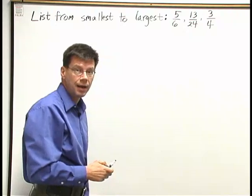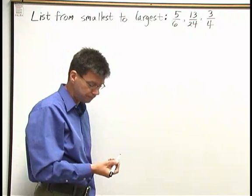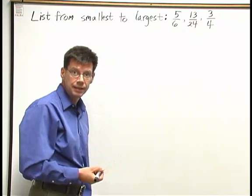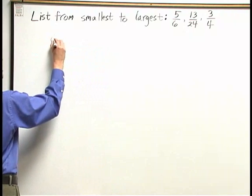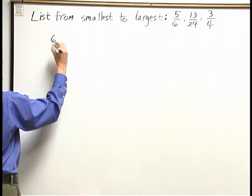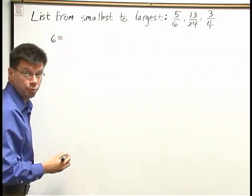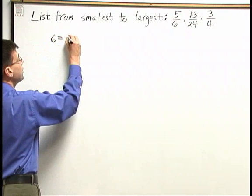So let's find that least common multiple. To do that, I need to take each denominator separately. So let's take 6. And I need to factor into primes. 6 is 2 times 3.